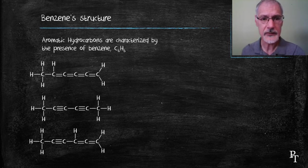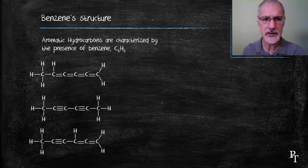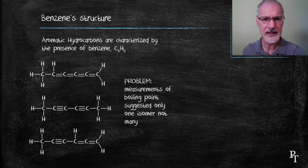If indeed this was the structure, we would expect a host of closely related boiling points or melting points. But the problem is we find that benzene has but one melting point and one boiling point, indicating it has only one structure, not many.